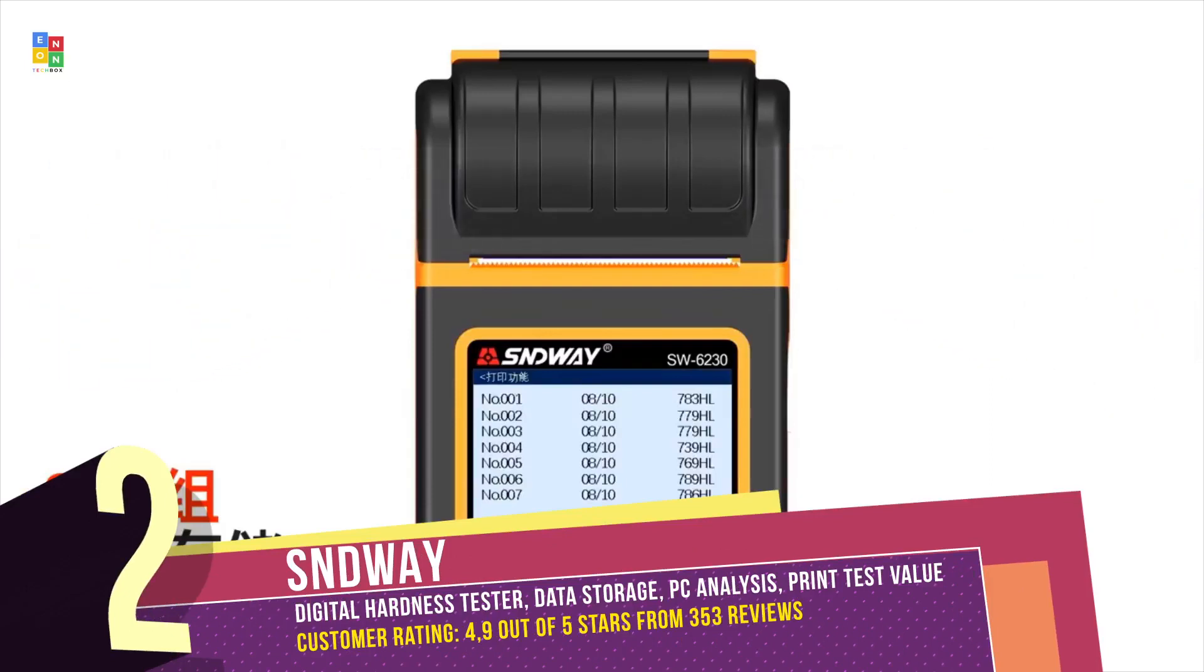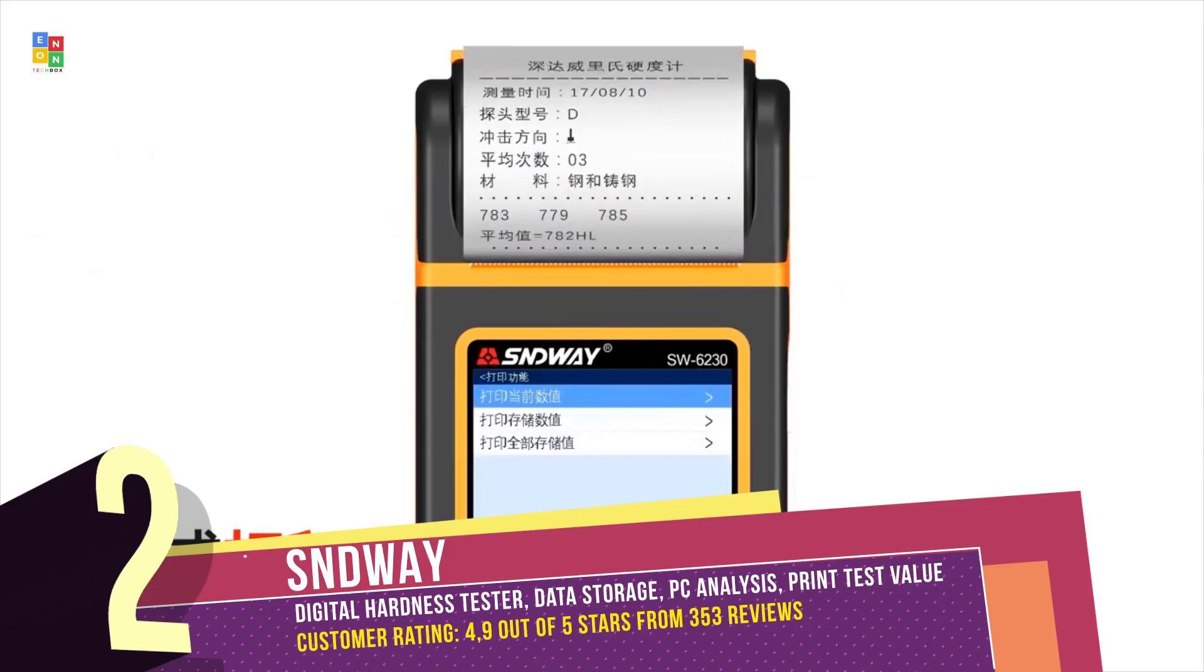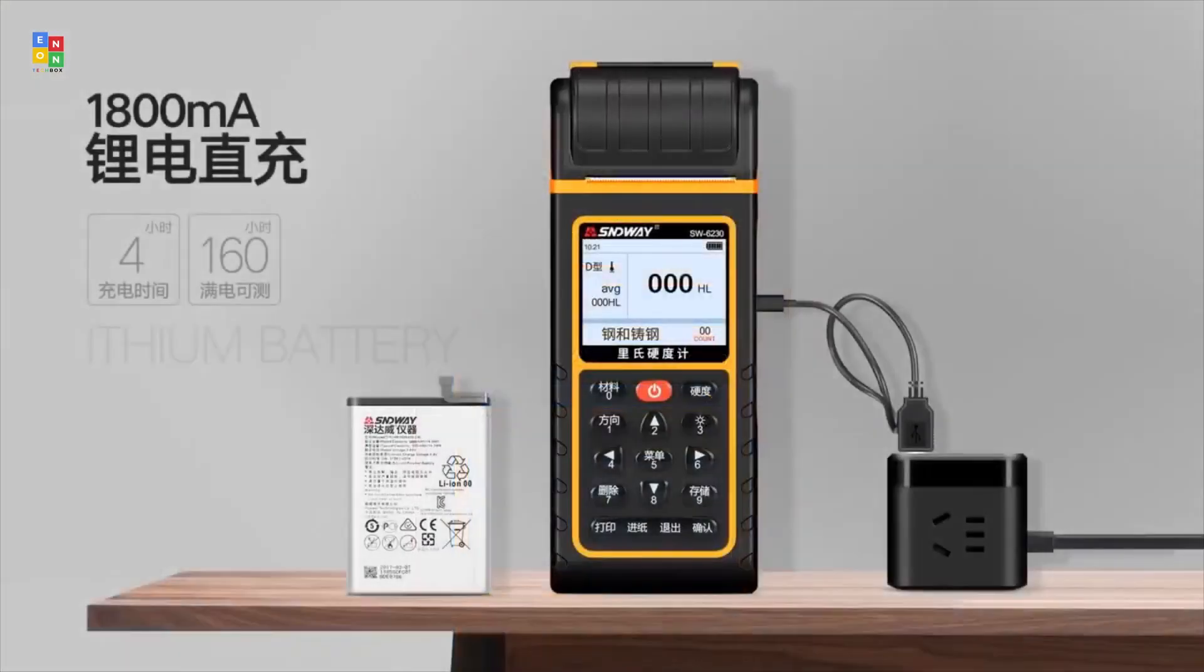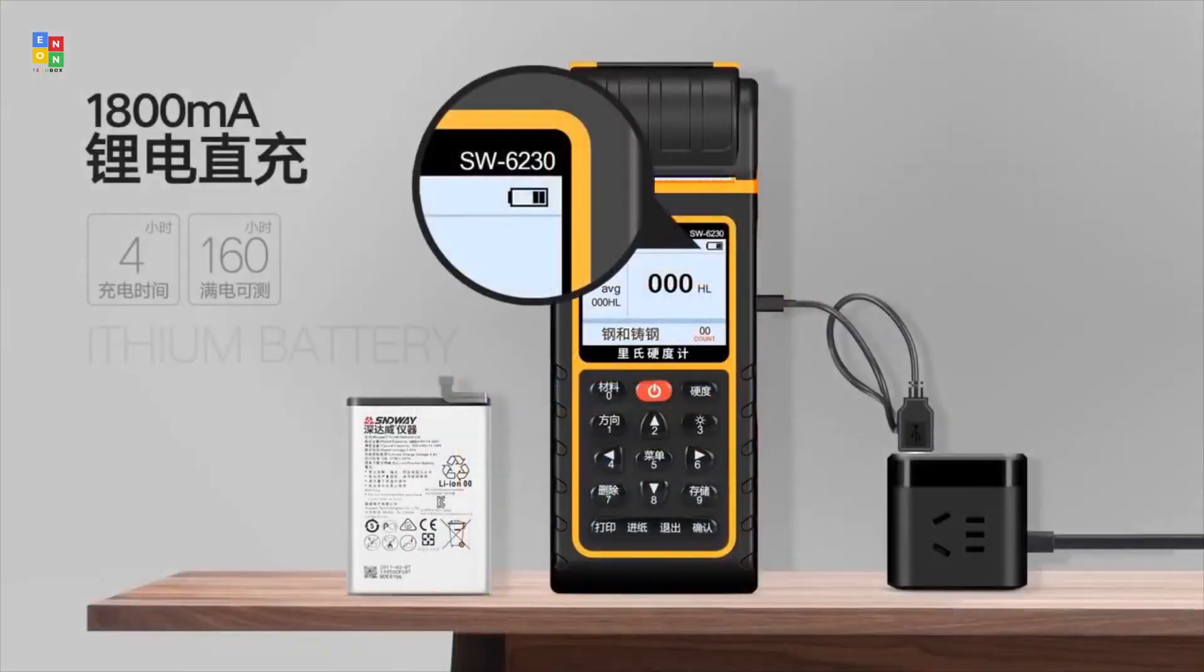Featuring impact device type D, it covers a broad measuring range of 170-960 HLD, supporting various measurement directions.